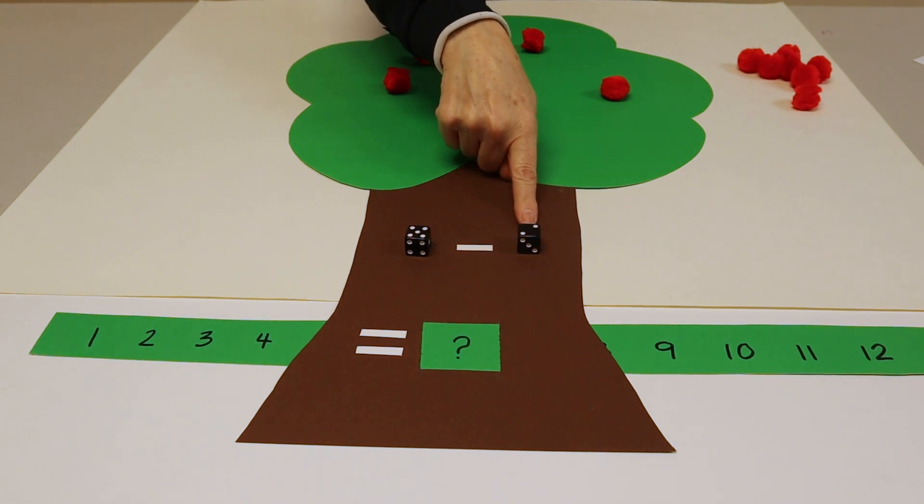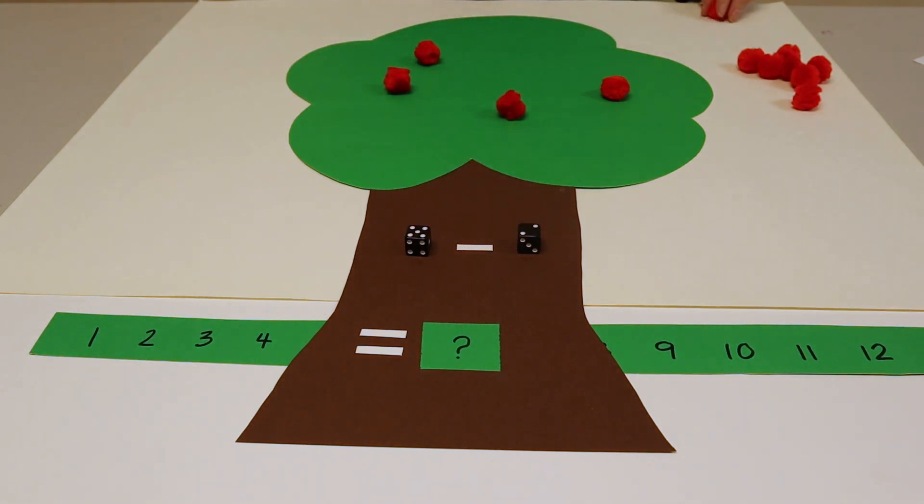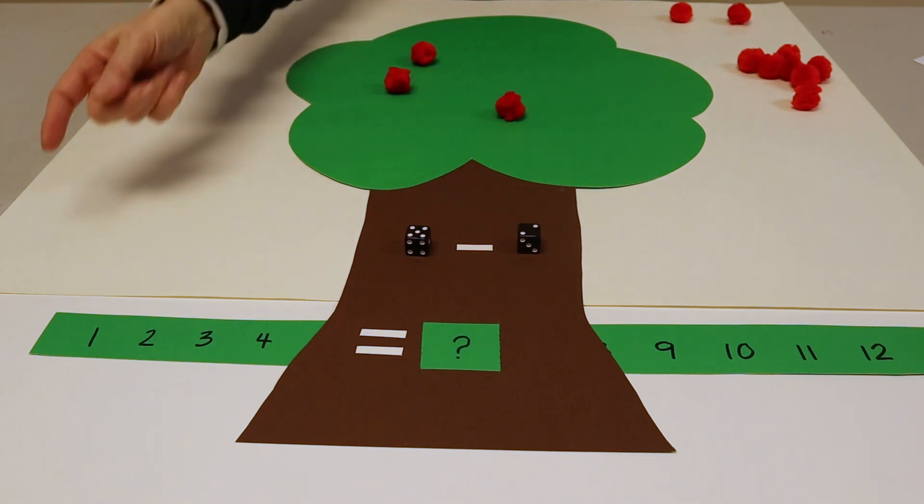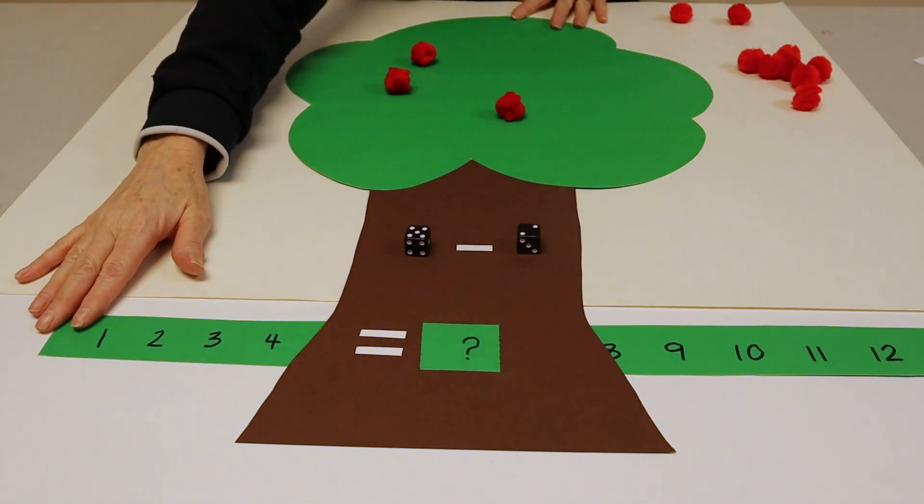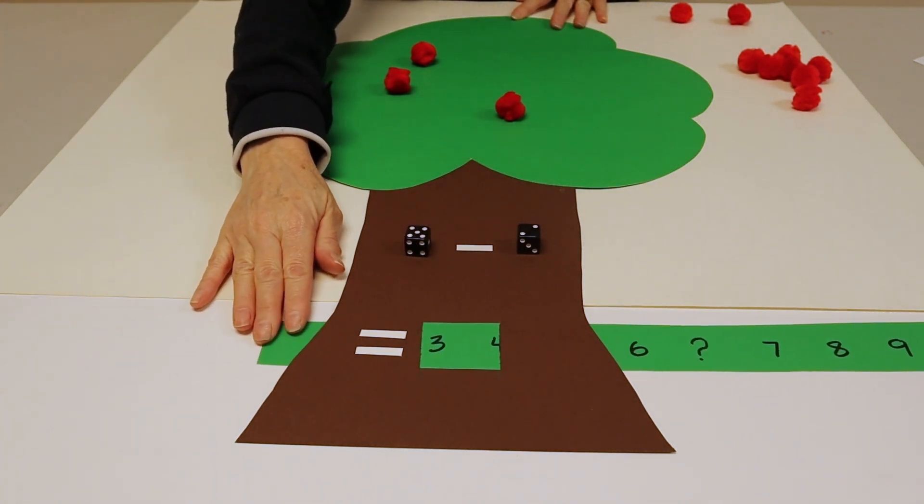Your child can select two apples and remove them and count the remaining apples left. One, two, three. Together using the number strip find the number three.